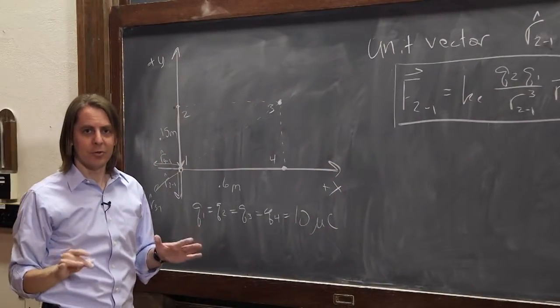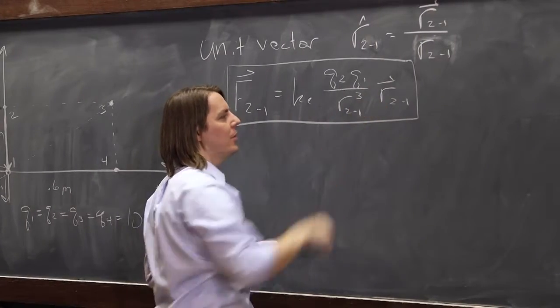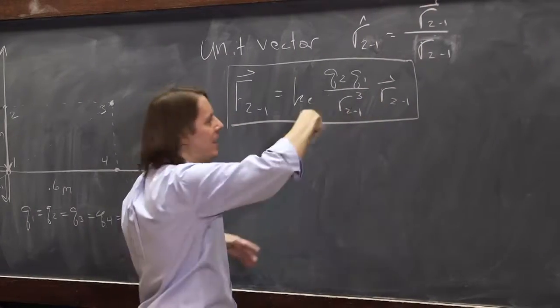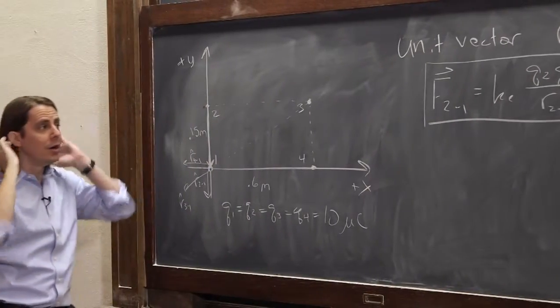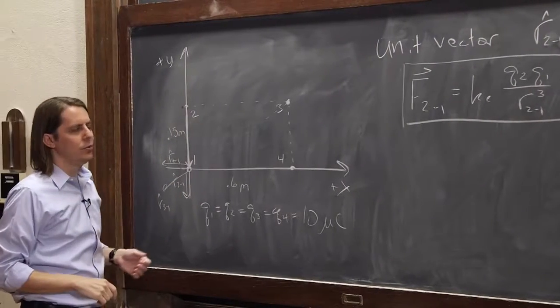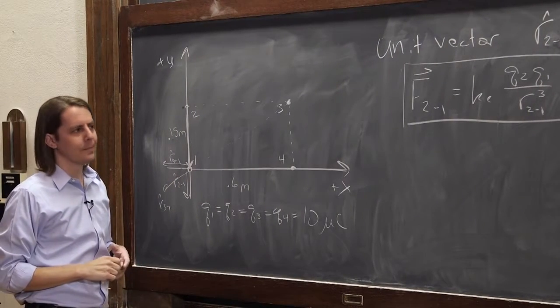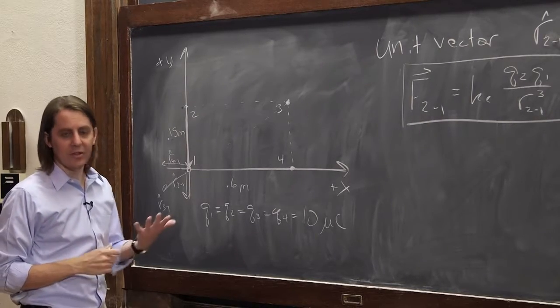It still goes as 1 over r squared. We have an r cubed down here, but now we have an r in the top. Okay? And when you cancel those out, it's still going as 1 over r squared. It's the same Coulomb's Law. It's just a way to write it where we don't have to guess what r hat 2,1 is. Okay? So let's use it a few times and let's see if it actually does anything for us.